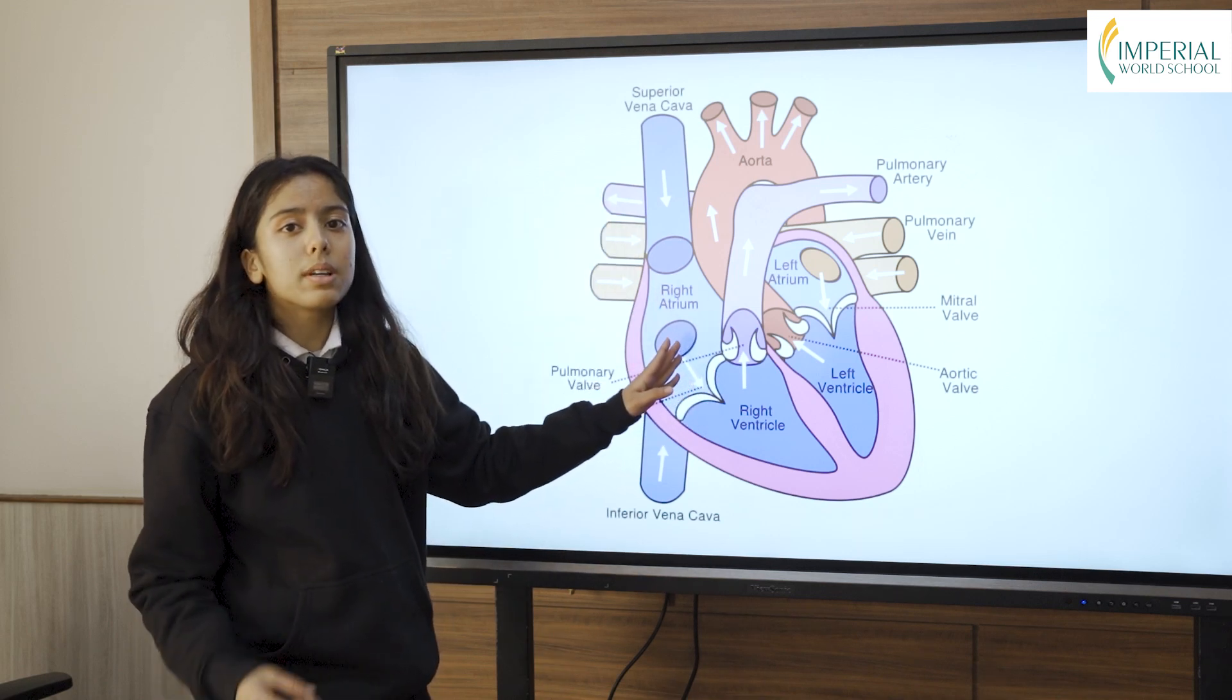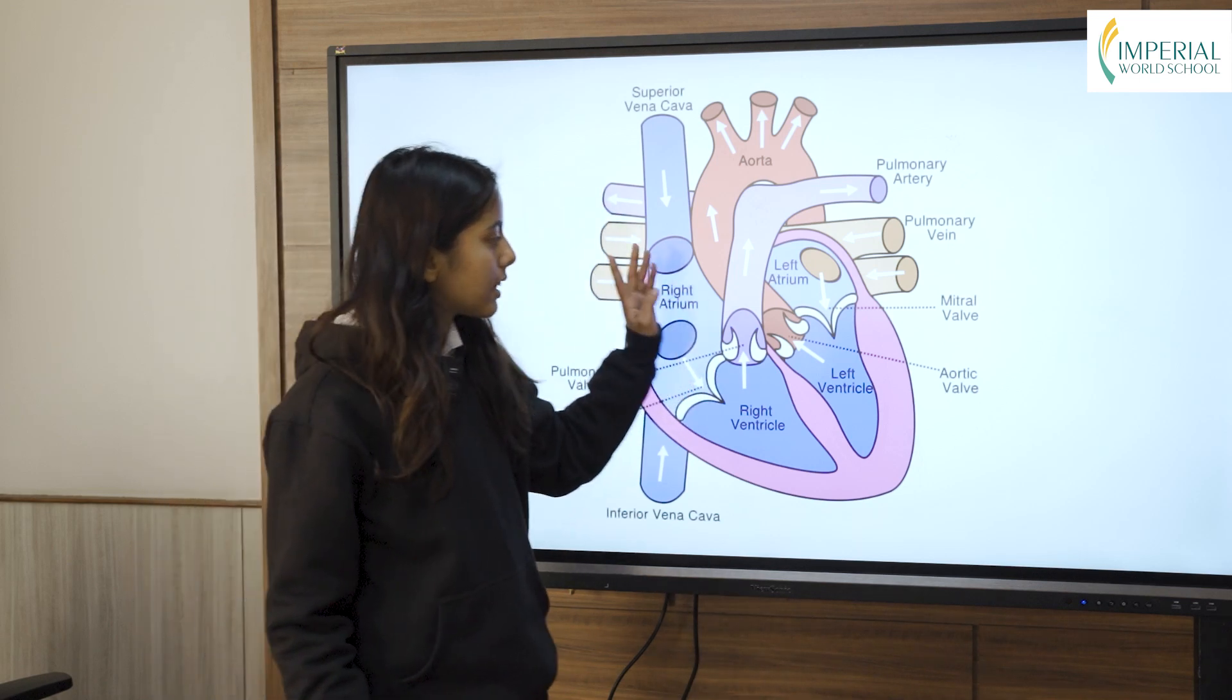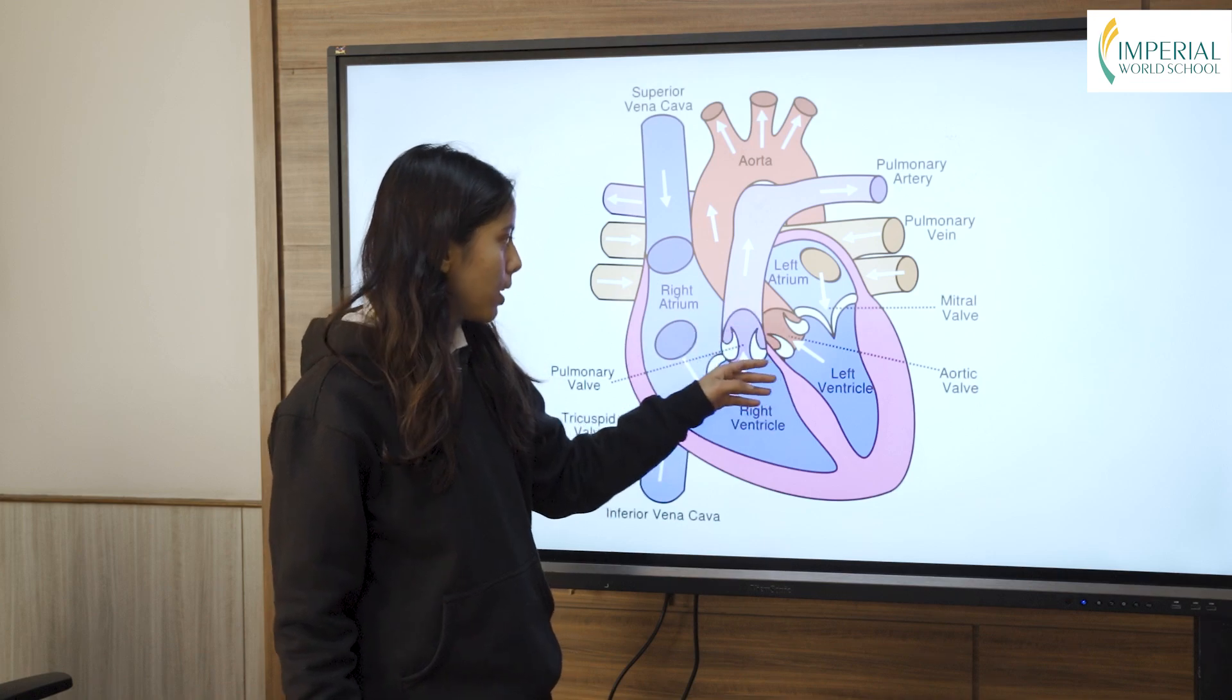The right side of the heart always contains deoxygenated blood while the left side always contains oxygenated blood.